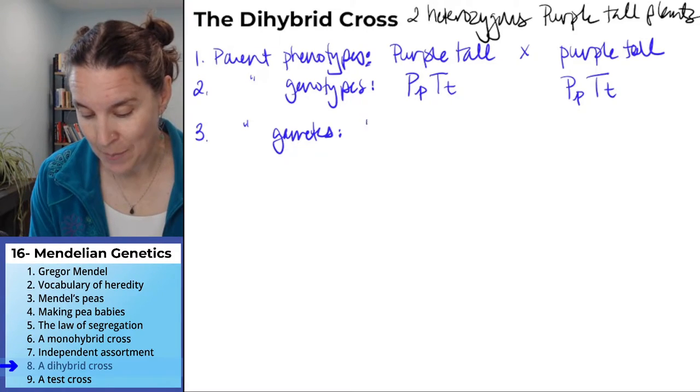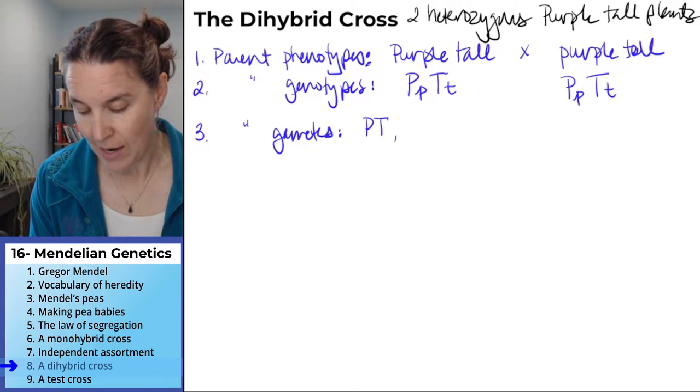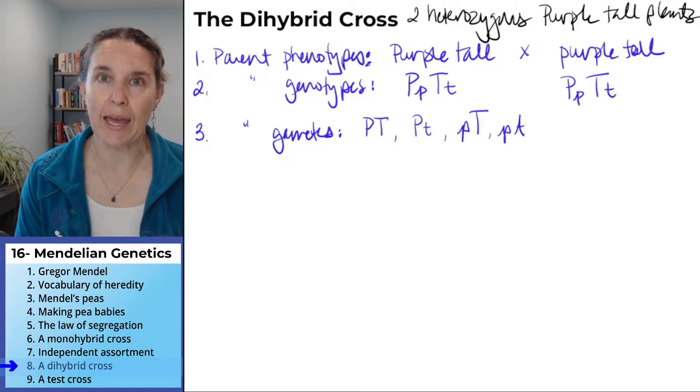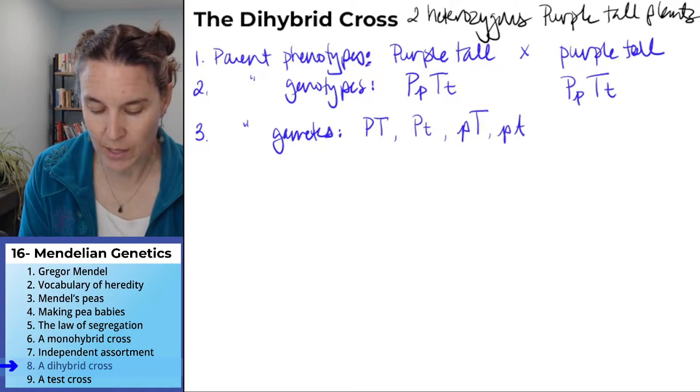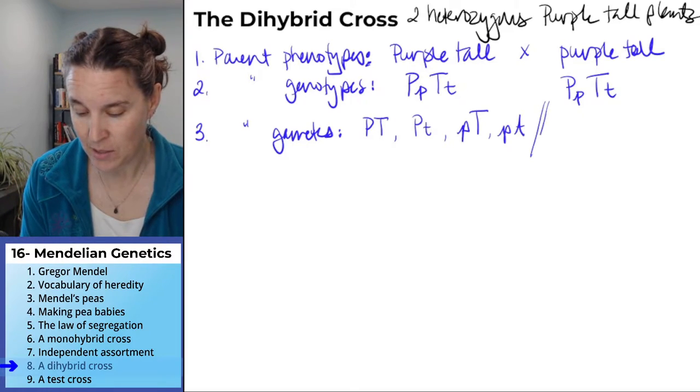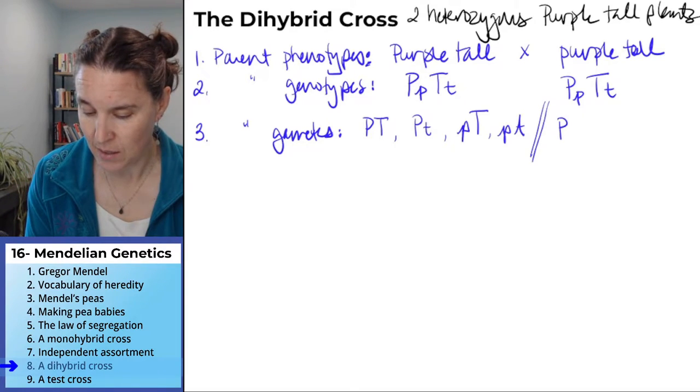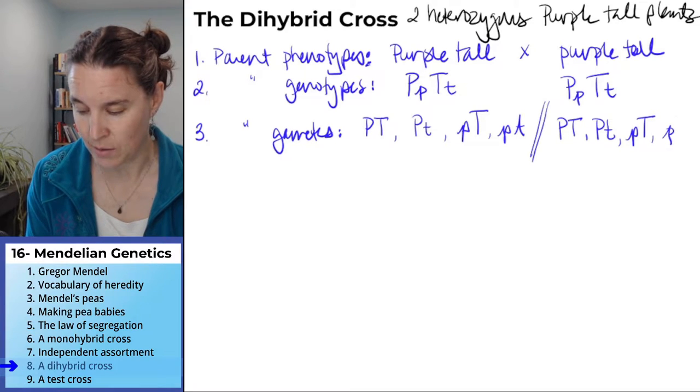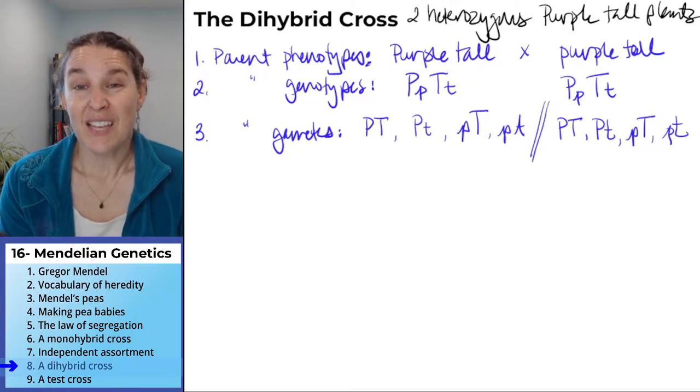Which means I'm going to start with big P and big T. And then I'm going to do big P, little t. And then I'm going to do little p, big T, and little p, little t. Those are my possible gametes for the first one. And those are the same possible gametes for the second one.